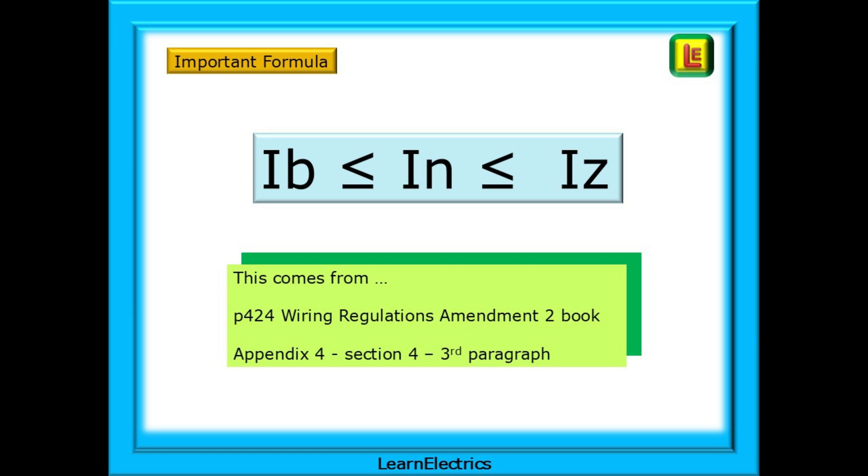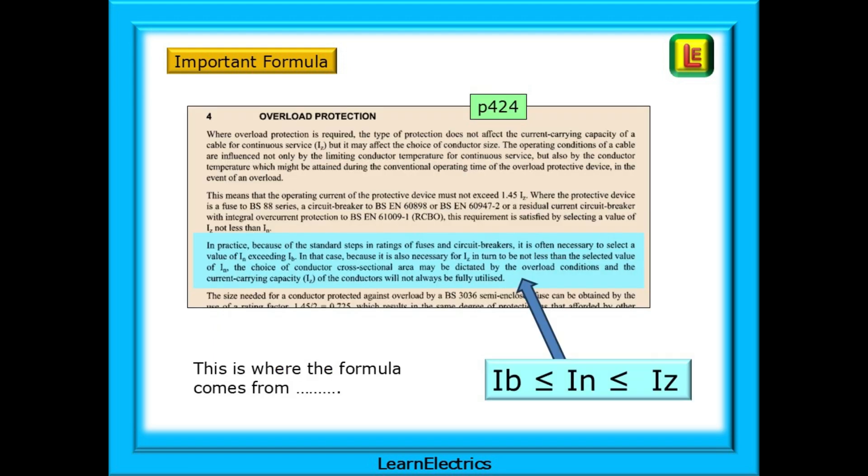The formula is talked about in words as follows. Look at page 424 of the Big Brown Amendment 2 book, and this is Appendix 4, Section 4, and look at the third paragraph. Shown here is part of this page, page 424, from the Brown Regs book. This information is not found in the on-site guide. Look at the blue highlighted area.